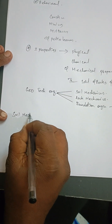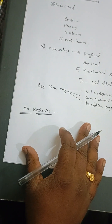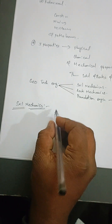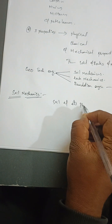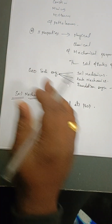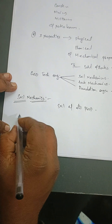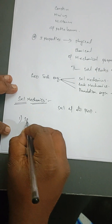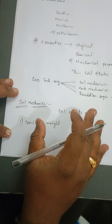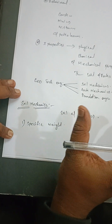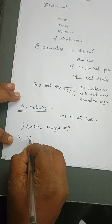In this video, we are going to talk mainly about soil mechanics. The other two areas will be discussed in later videos. Soil mechanics deals with soil and its properties. The key terms in soil mechanics are: first, specific weight — which is the weight of the material relative to the total weight of the soil — and second, void ratio.